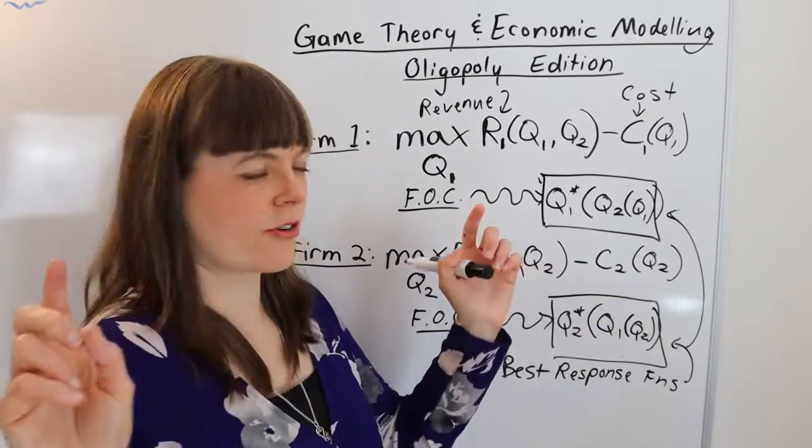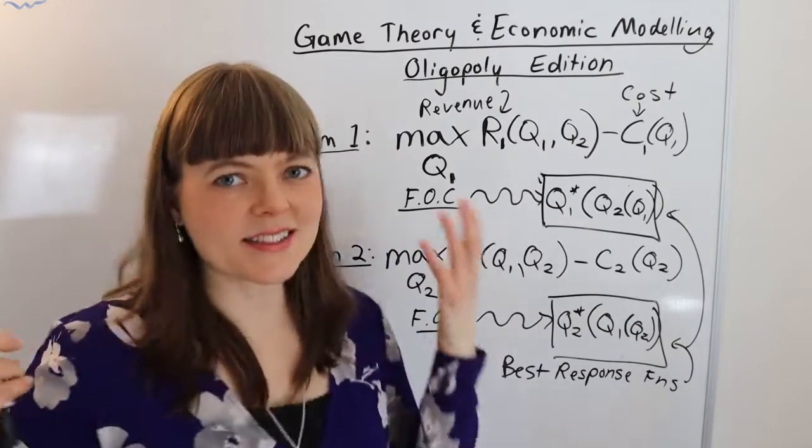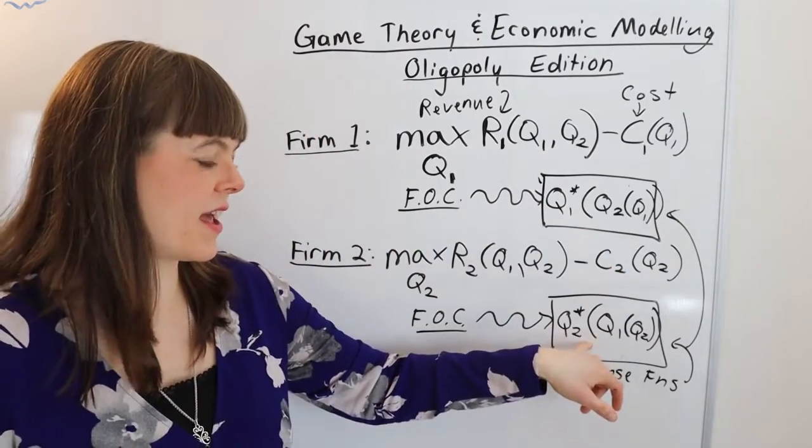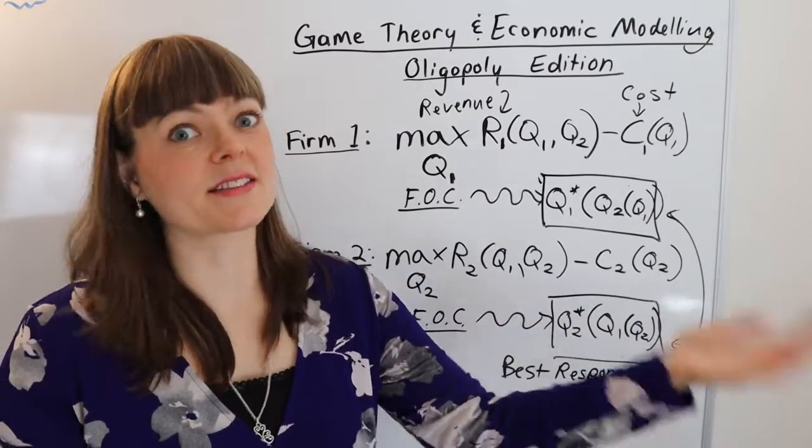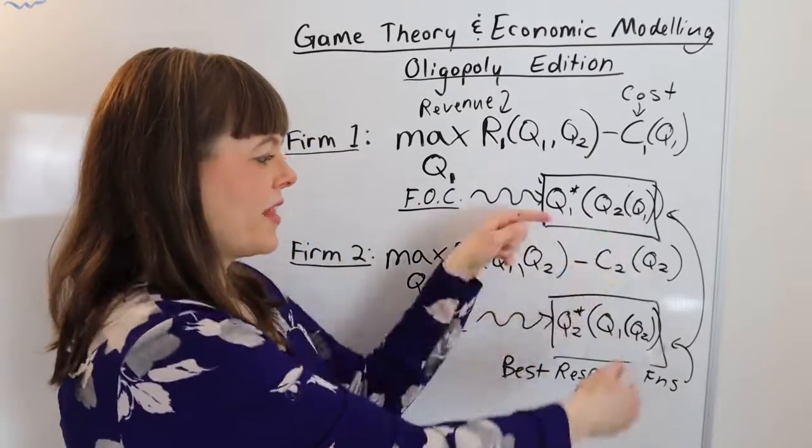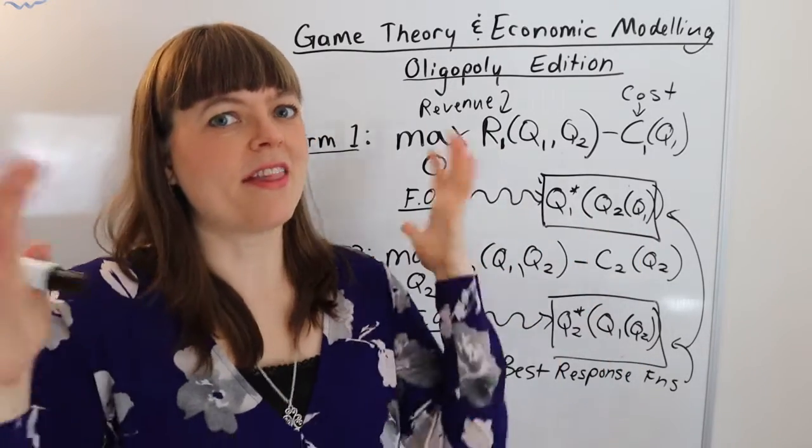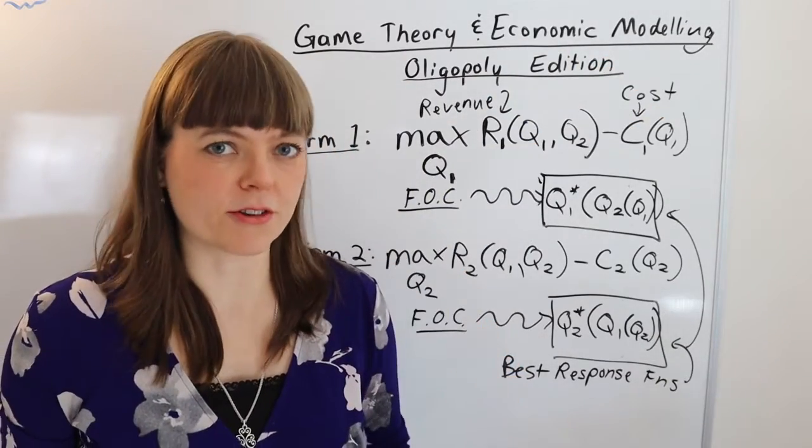When you can say yes this is my best response given their best response and they can say yes this is my best response given your best response, when they can say that back and forth that's Nash equilibrium - that's how game theory appears in an economic model.